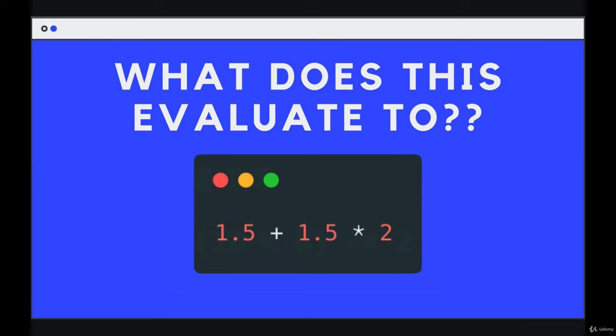The first one is relatively straightforward math. 1.5 times 2 is going to happen first because of the order of operations, so that gives us 3. And we add that to 1.5, which gives us 4.5.